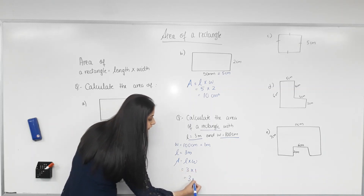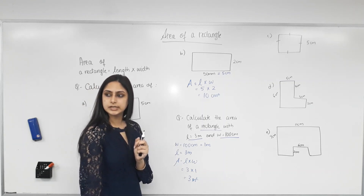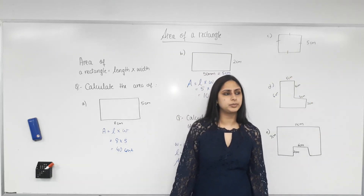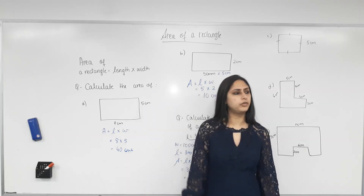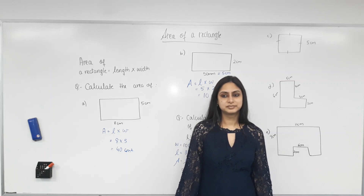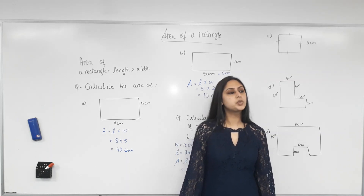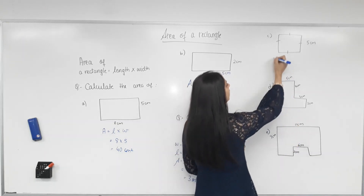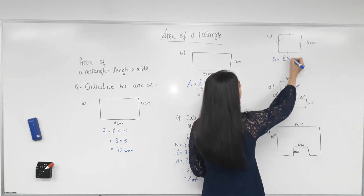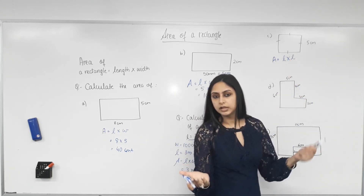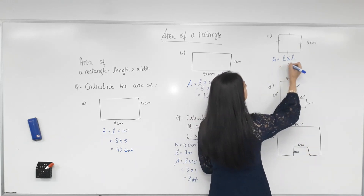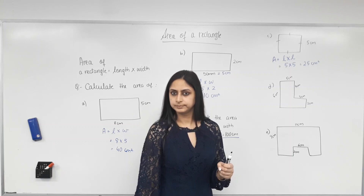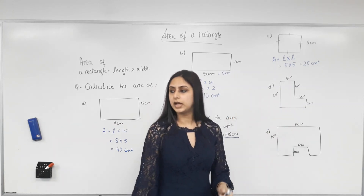What do those four equal-length marks on the sides represent? They're all equal — so the shape is a square. A square is a special kind of rectangle in which all sides are equal, so the same formula works. Instead of length times width, it becomes length times length, or side times side — side squared. You can still use length times width as long as you know both sides are the same.